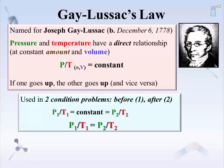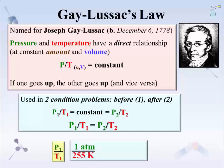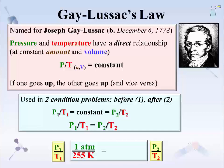For example, under conditions of Gay-Lussac's law, a gas is found to have a pressure of 1 atmosphere and a temperature of 255 K. What happens to the temperature if the pressure is increased to 1.2 atm? The law is one of direct proportion — if pressure goes up, so does the temperature. Conversely, returning to the original values, if the temperature is decreased, we should then expect the pressure to also decrease.